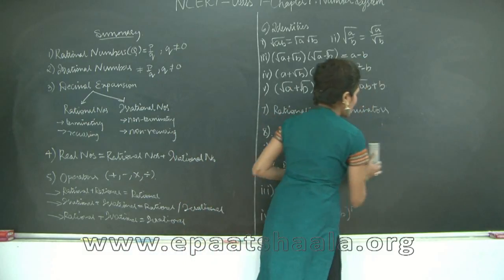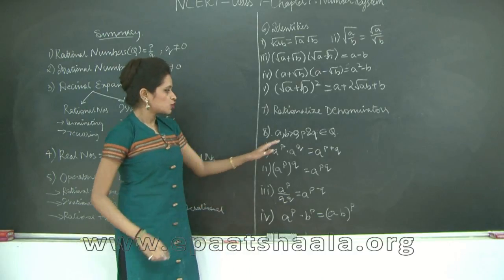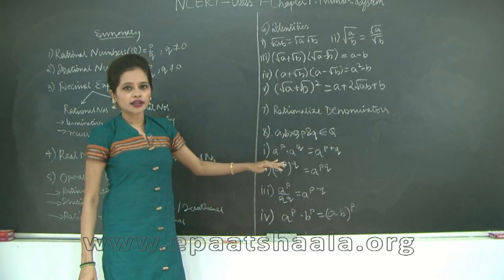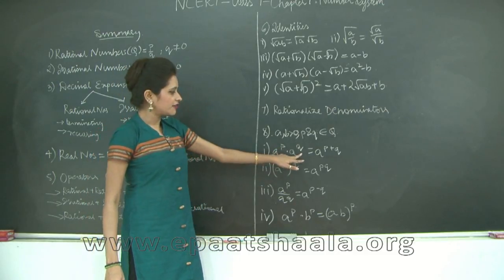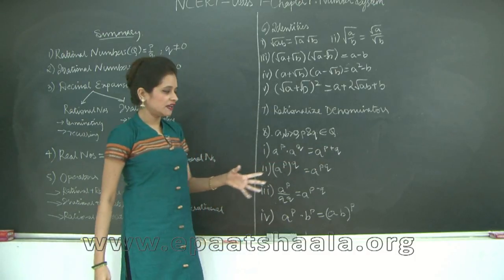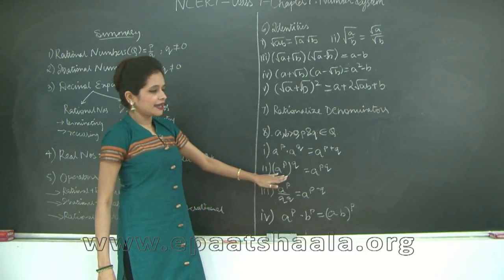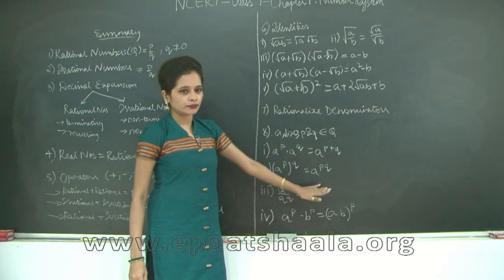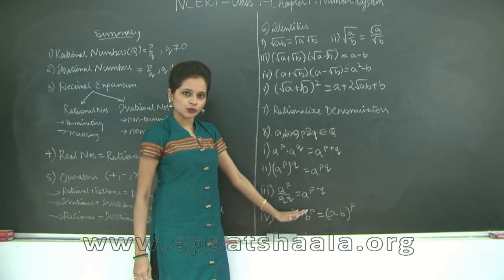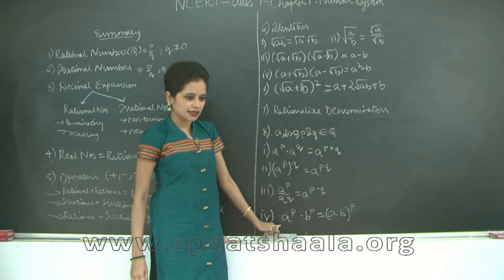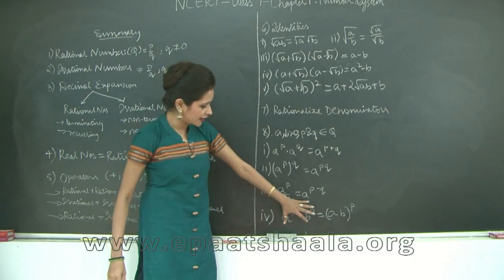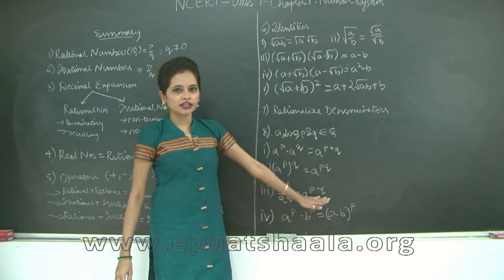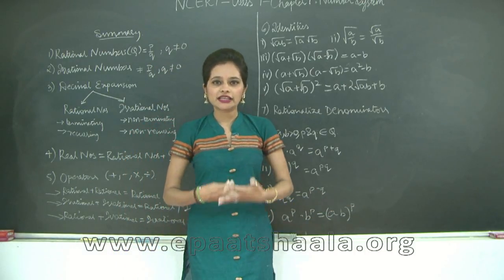Finally, the laws of exponents extended for rational numbers. If a and b are positive integers greater than 0, and p and q belong to the set of rational numbers: a^p × a^q = a^(p+q); (a^p)^q = a^(pq); a^p ÷ a^q = a^(p−q); and a^p × b^p = (a·b)^p, where the bases differ but exponents are the same, so you multiply the bases and keep the common exponent.